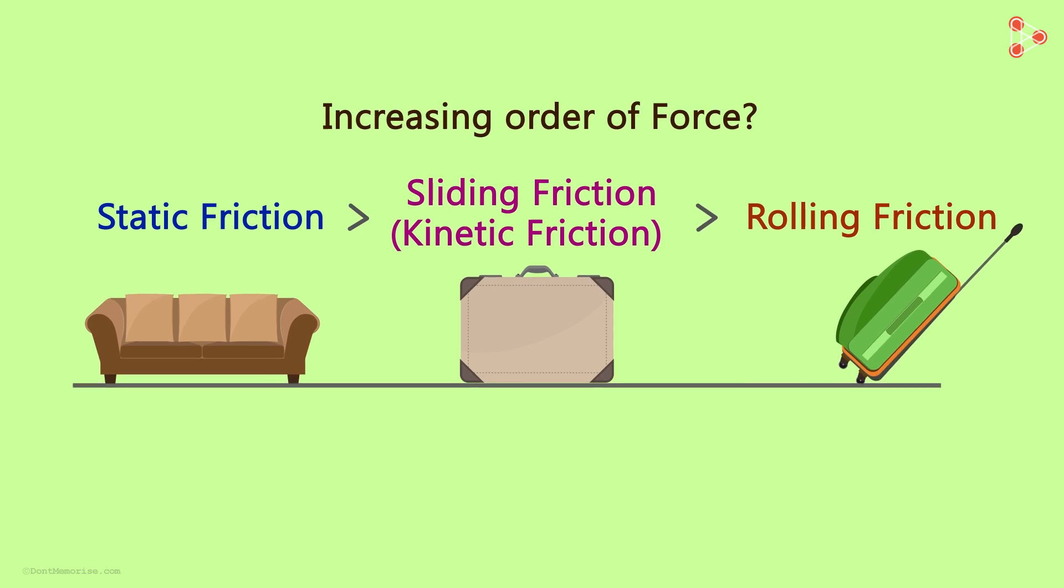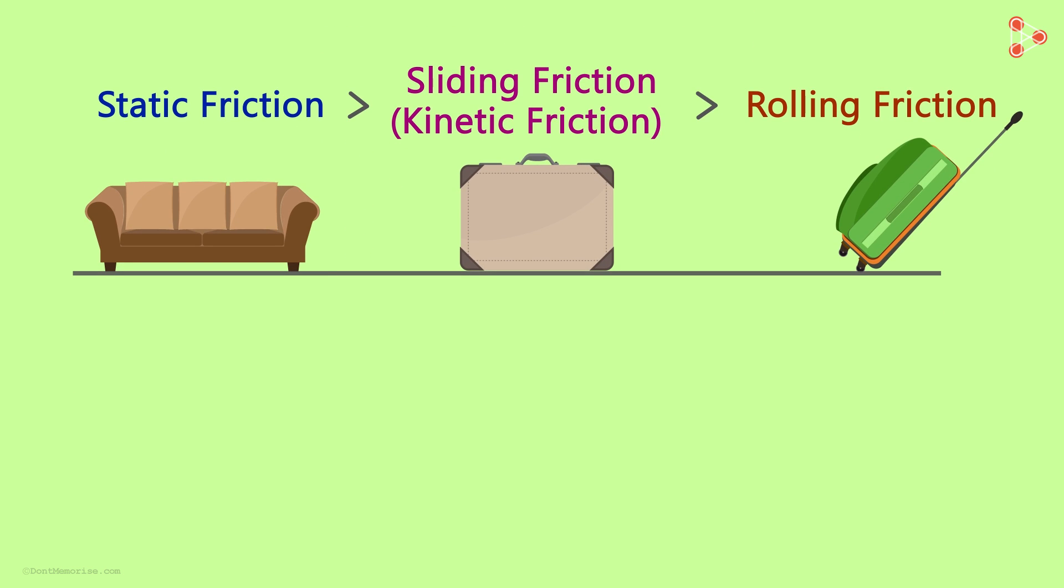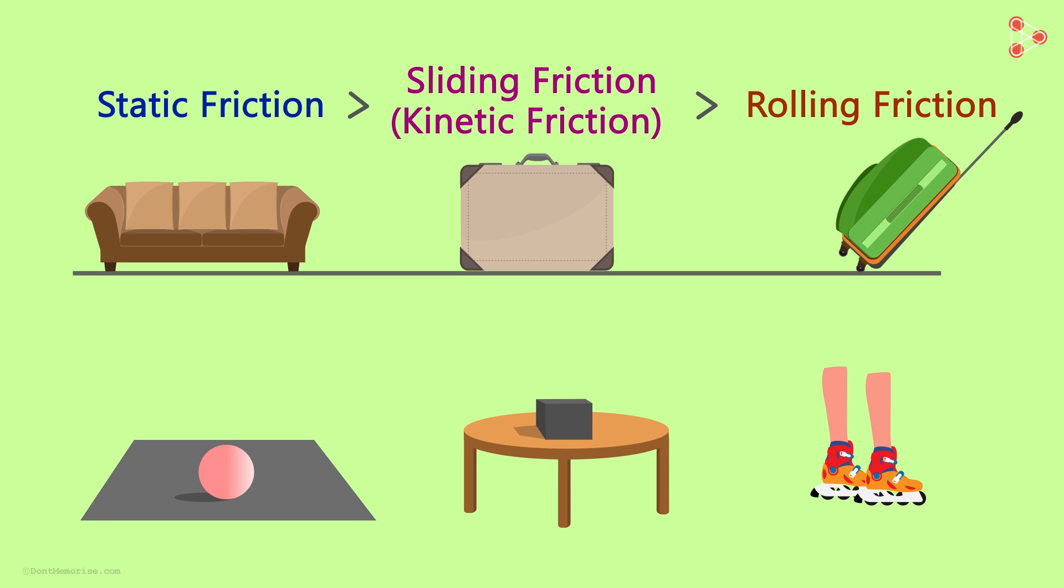In all the examples we've seen so far, we've only considered friction between solid parts: ball on a floor, box on a table or roller skates on the ground. In all cases, both the objects were solid.